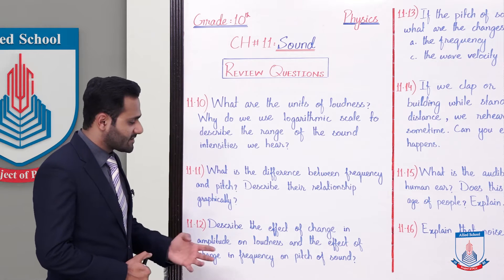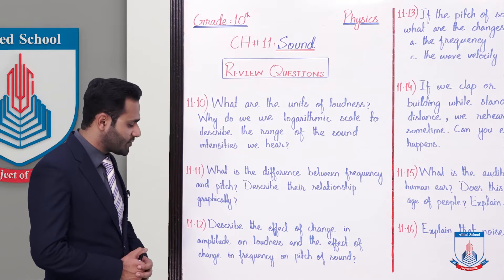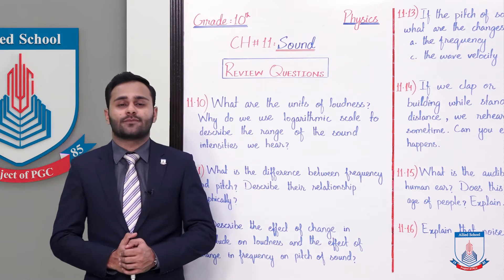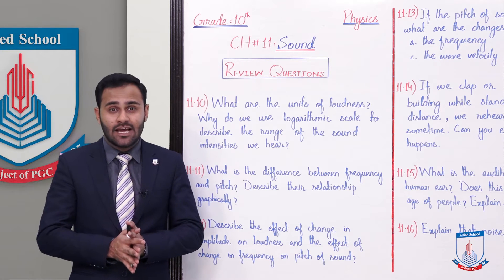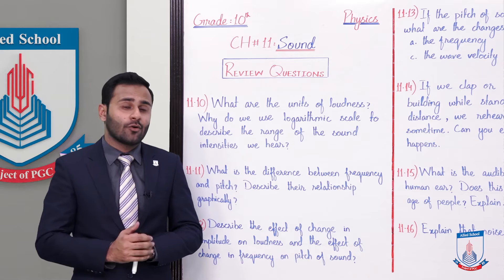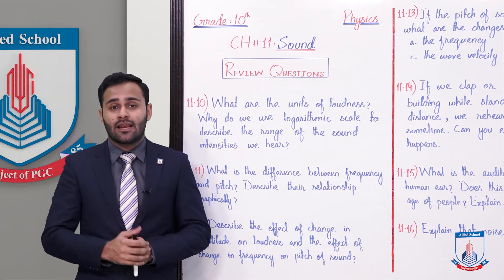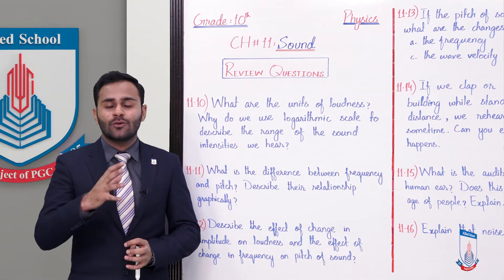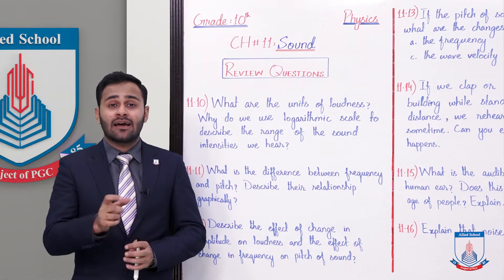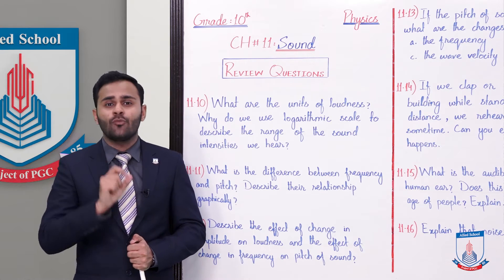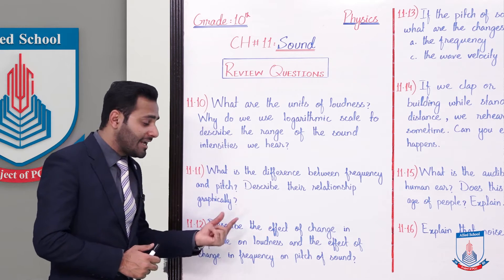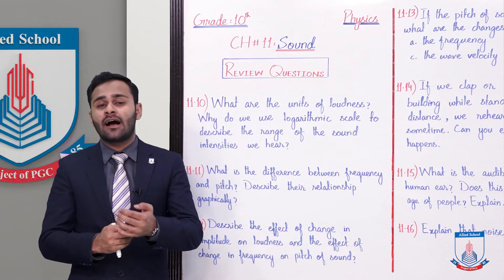Question 11.12: Describe the effect of change in amplitude on loudness and the effect of change in frequency on pitch of sound. First part - amplitude ka loudness per kya effect hota hai? Loudness is directly proportional to the amplitude of the sound - jitna amplitude zyada hogi loudness bhi utni zyada hogi, amplitude jitna kam hogi loudness bhi utni kam hogi. Like for example, agar hum kisi drum ko forcefully strike karein to us mein se unchi awaaz paida hoti hai means loudness bhi bohat zyada hogi, wahaan par uska amplitude bhi bohat zyada hogi. Similarly, agar aap usi drum ko ahista strike karein to wahaan par jo sound produce hoga uski loudness bhi bohat kam hogi. So amplitude ka loudness per bohat zyada effect hota hai - jiaise amplitude vary karega, loudness bhi vary karegi.